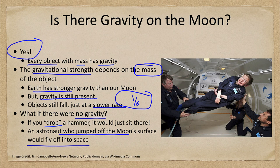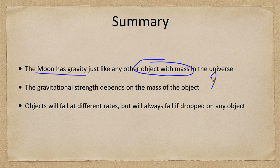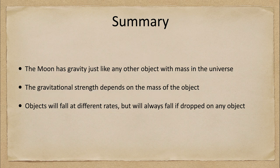So let's finish up and summarize what we've looked at. The Moon has gravity just like every other object with mass in the entire universe. We know that the strength of gravity depends on the mass of the object, and that objects will fall at different rates, but will always fall if dropped — faster or slower depending on the mass of the object on which you are dropping that hammer, for example. So that concludes this week's Misconception in Astronomy about there being no gravity on the Moon.